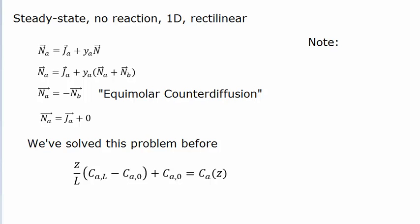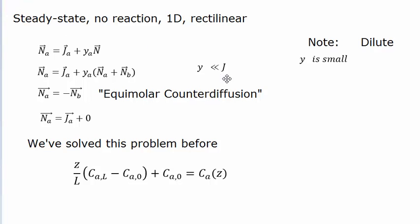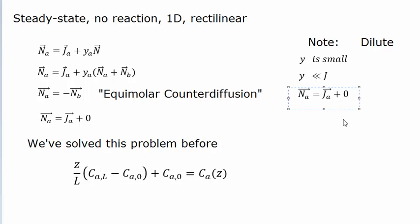There is another way you can arrive at this concentration profile. If you say the concentration of A is incredibly dilute, the mole fraction of A is incredibly small, so the contribution from the advective term is incredibly small as well. Most of the convection that occurs within the system will be as a result of diffusion. The total flux of the system is approximately just the diffusive flux.